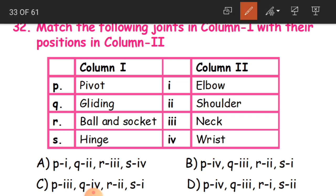We have to match the joints with where they exist. Pivot joint - it is in the neck. Gliding joint - it is in the wrist, it moves like a slide. Ball and socket joint - it is in the shoulder.